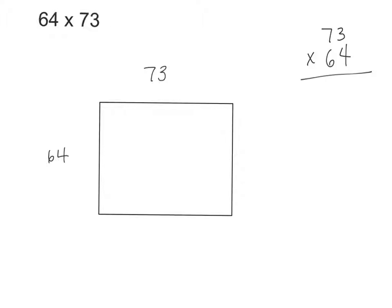Now I know that if I'm going to use an area model, I need to put one factor at the top, one length. So 73 is up here and 64 is here. How about I split up 64 to make it easier to solve? I could make 64 into what plus what? Two addends that can equal 64. 60 and 4. I could split this up and over here is 4 and over here is 60.